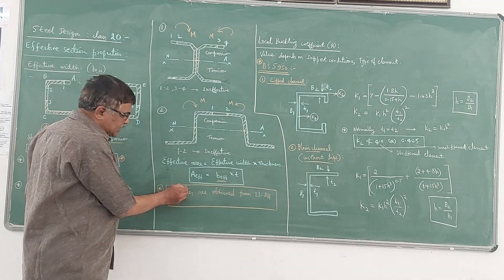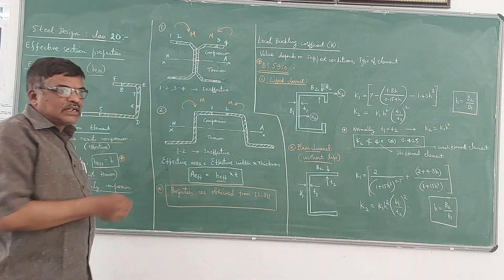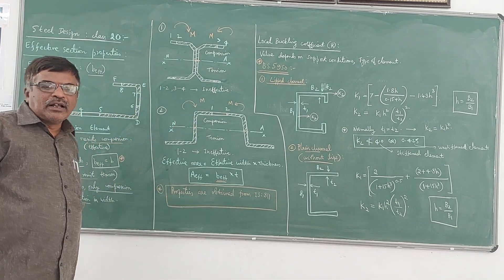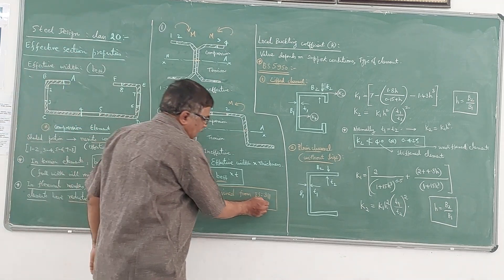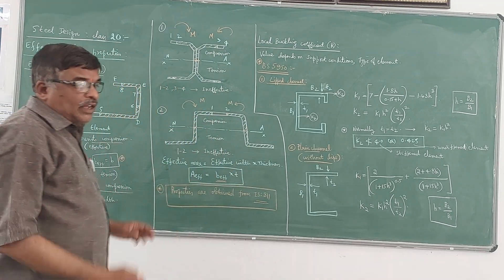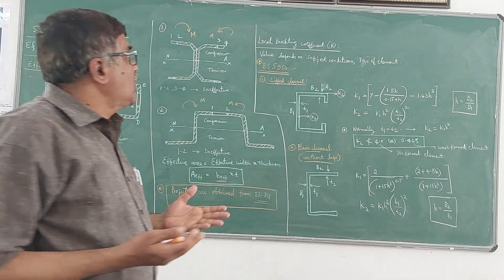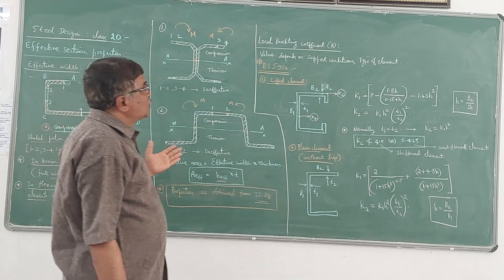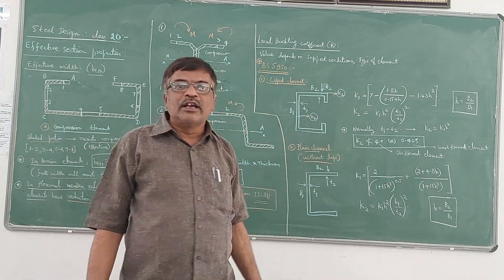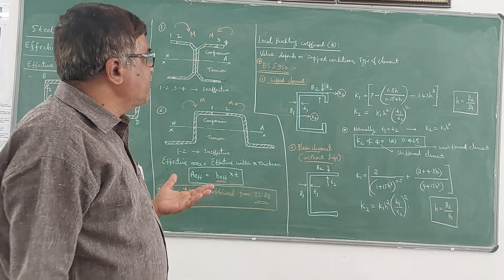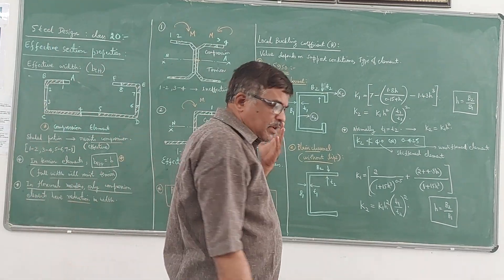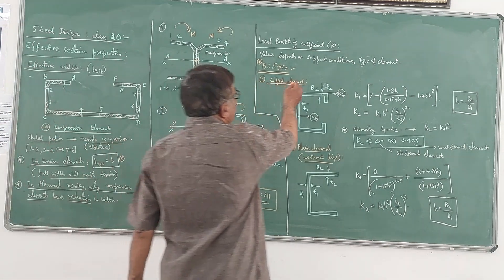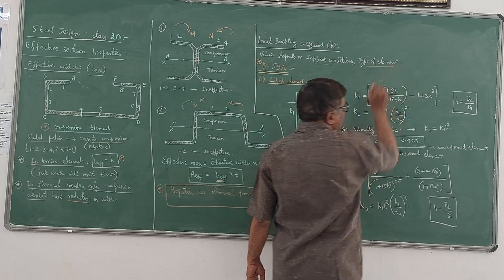All these properties of cold-formed steel sections are available in IS-811, which you can refer to. The next concept is the local buckling coefficient K, explained also in the earlier video. This local buckling coefficient is a measure of the buckling of a particular element, whether it is a stiffened or unstiffened element, and depends on support conditions.